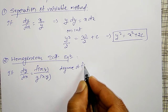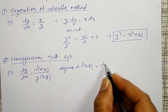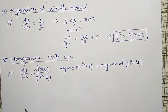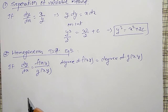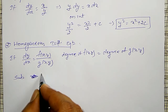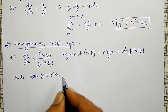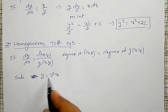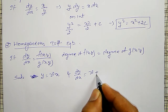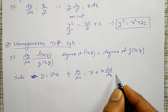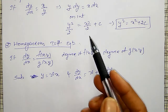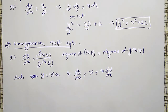The degree of f of xy is equal to the degree of g of xy. Such differential equations are said to be homogeneous. To solve them, we substitute y equal to v times x. This gives dy by dx equal to v plus x times dv by dx. Substituting into the differential equation reduces it to the separation of variable method, then we solve.